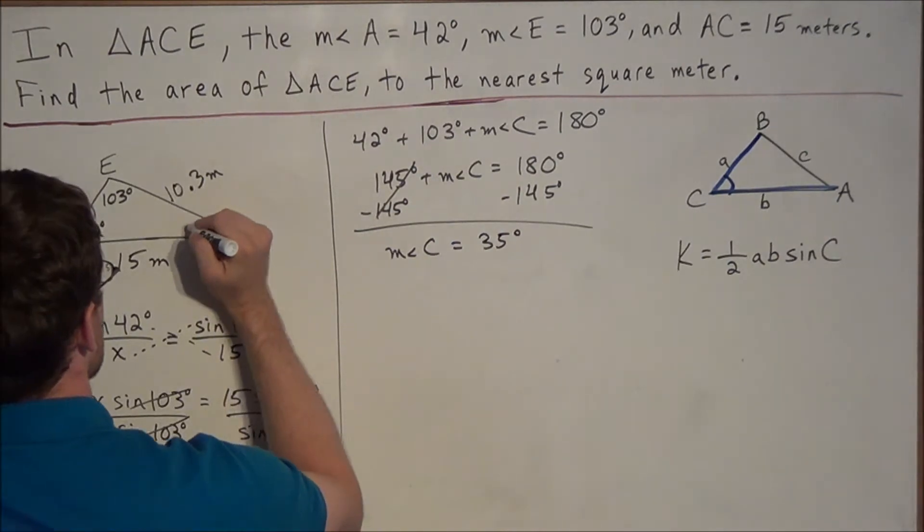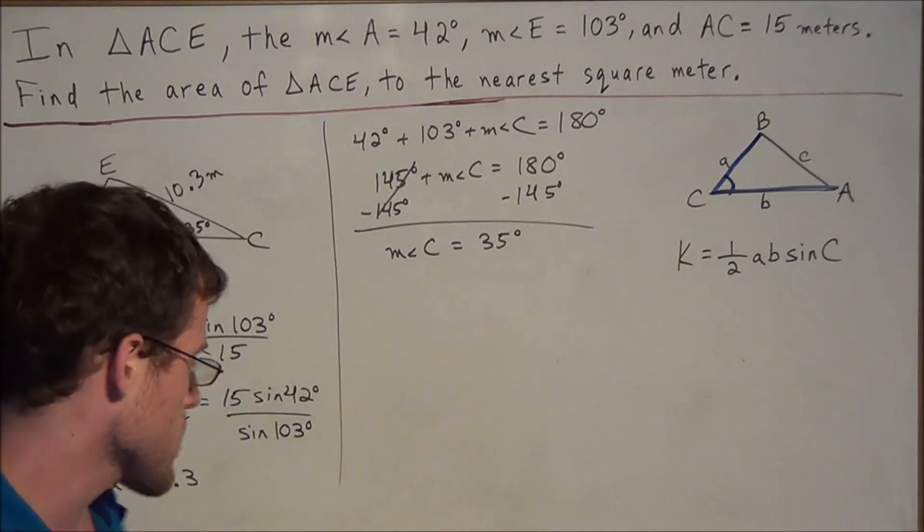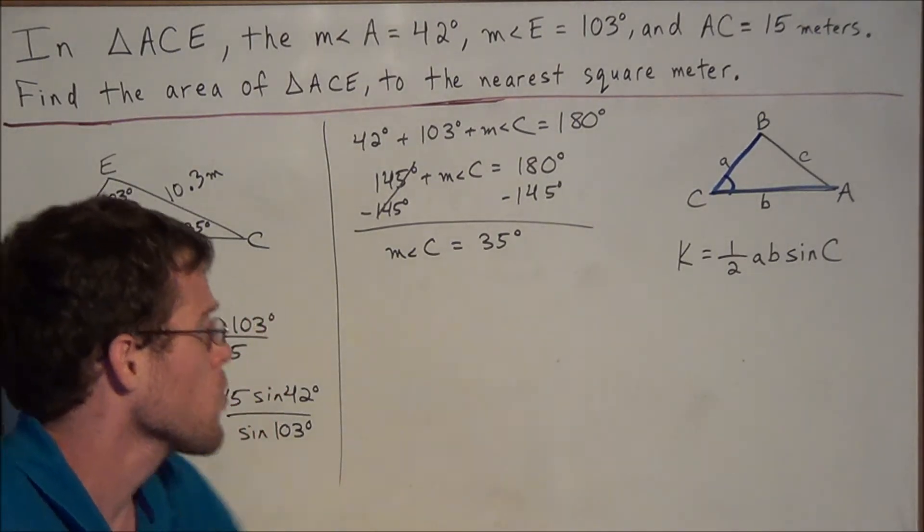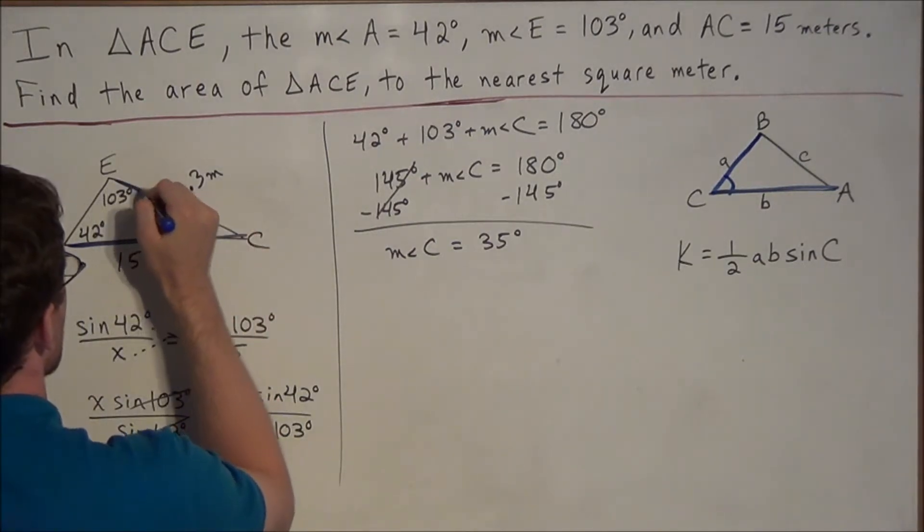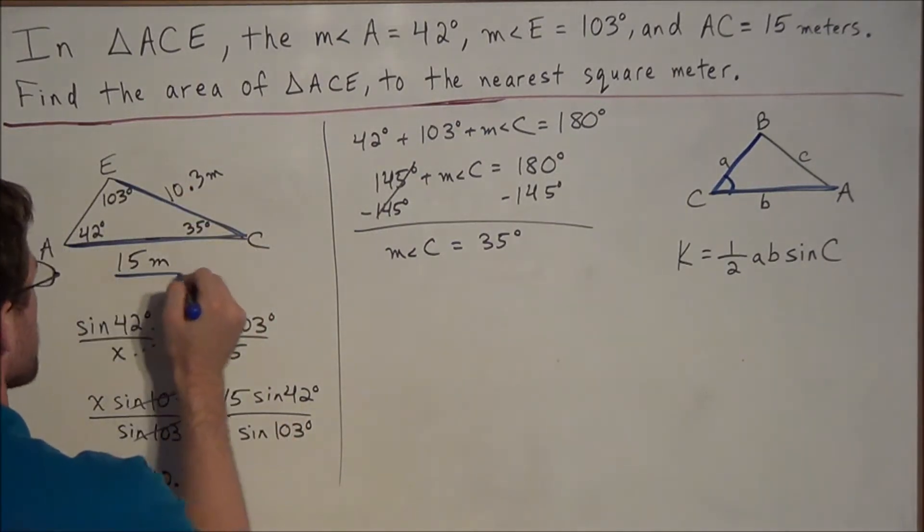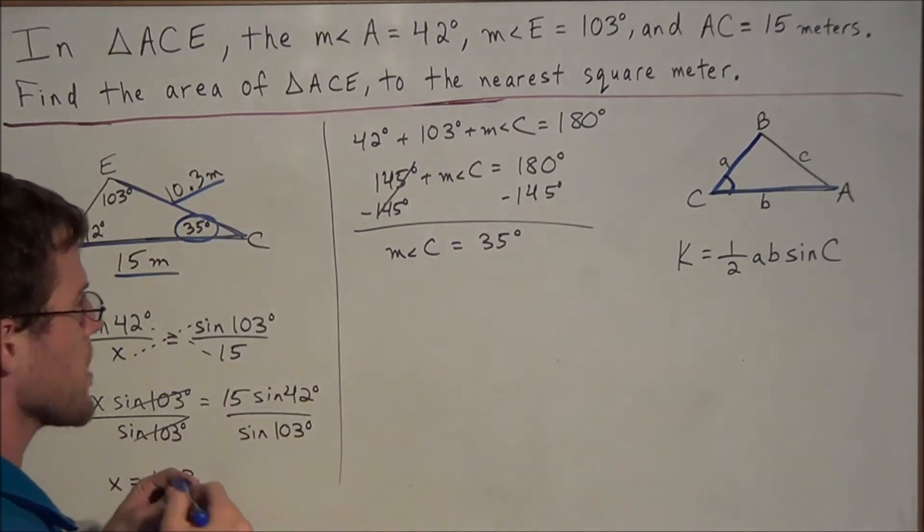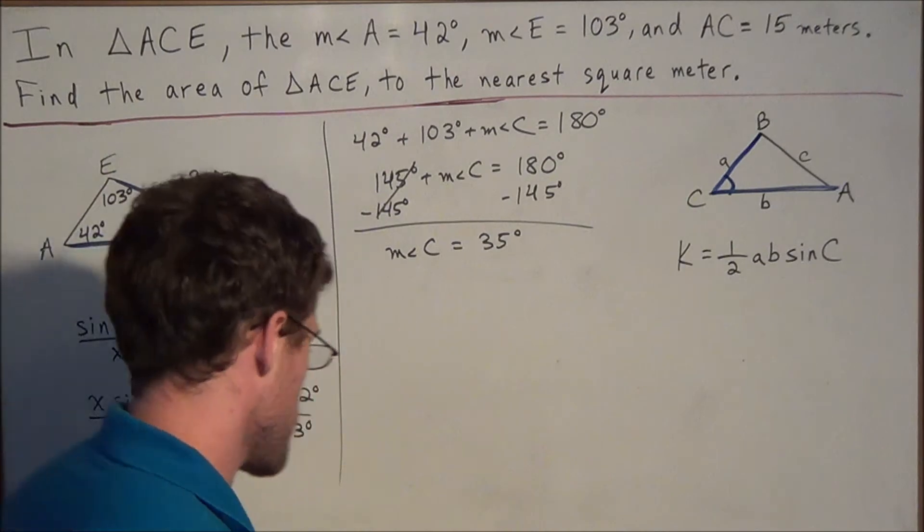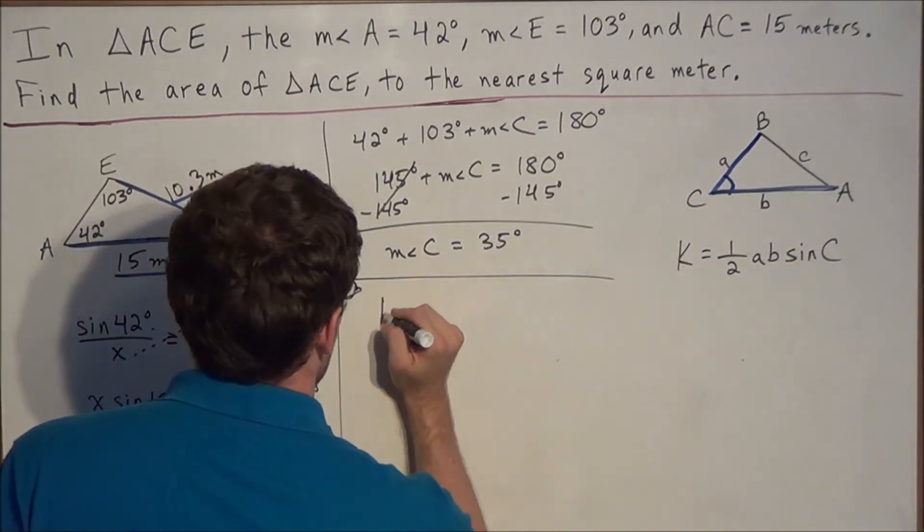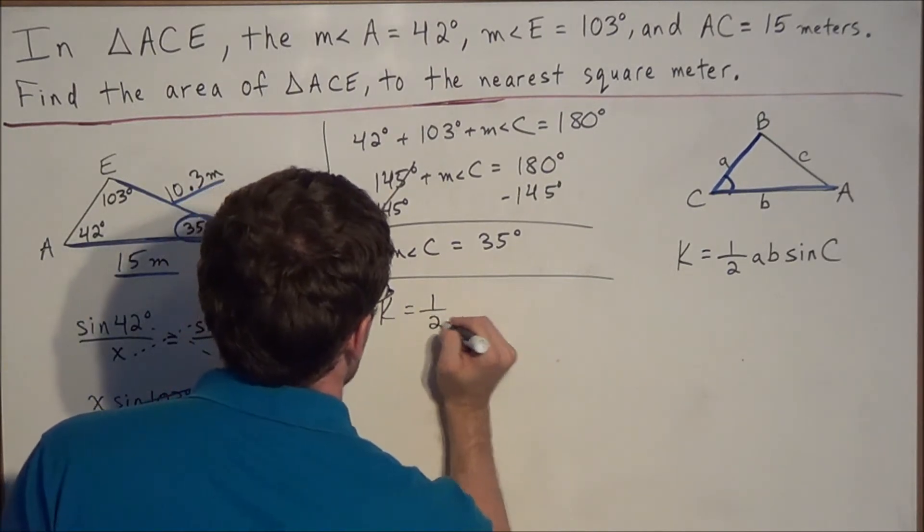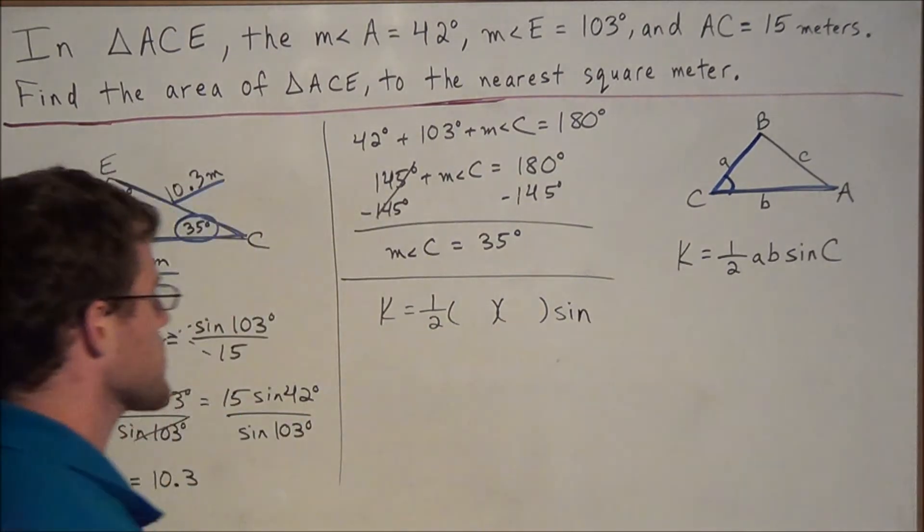So now this gets us much closer to being able to solve this problem because now we have the three pieces of information that we need. We have our side angle side connection that we were looking for. So we're going to use 15, we're going to use 35 degrees, and 10.3 as our values to plug into our equation. So for the next step, we're using K equals 1/2 A times B times sine of angle C.